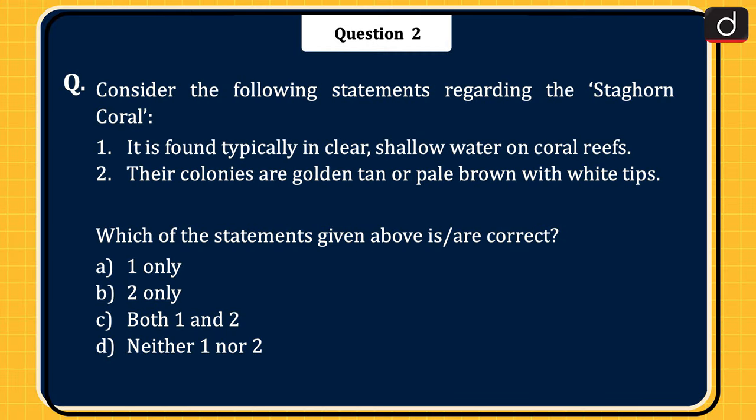The next question: consider the following statements regarding the staghorn coral. Statement 1: it is found typically in clear shallow water on coral reefs. Statement 2: their colonies are golden tan or pale brown with white tips. Which of the statements is or are correct? 1 only, 2 only, both 1 and 2, or neither 1 nor 2. The correct answer is option C, both 1 and 2.